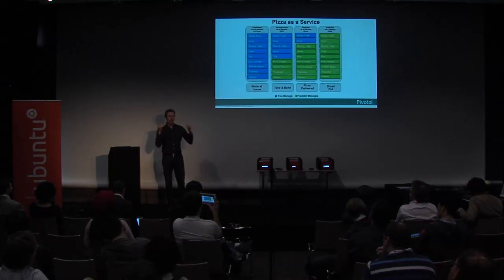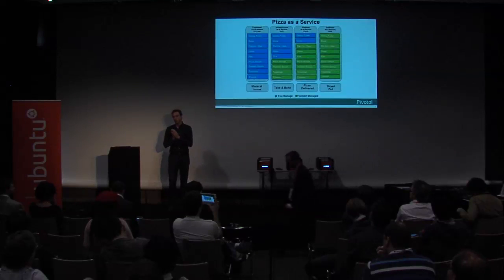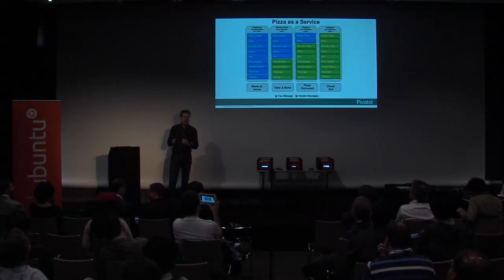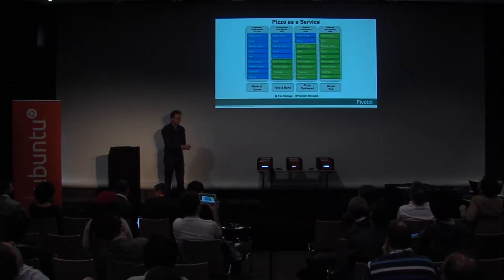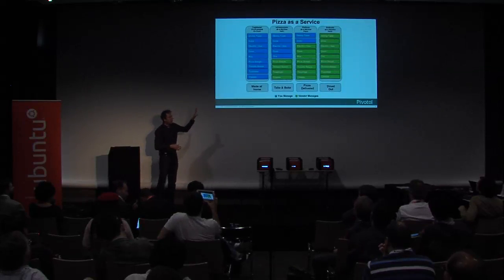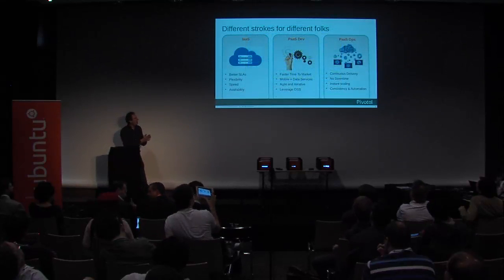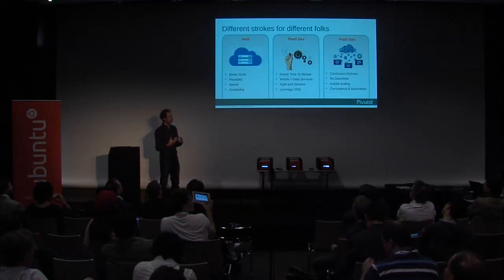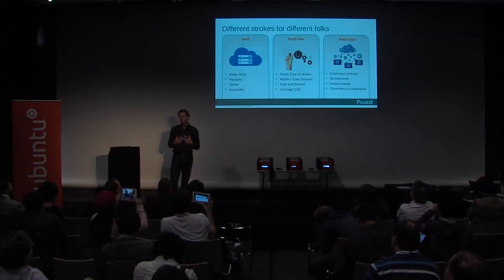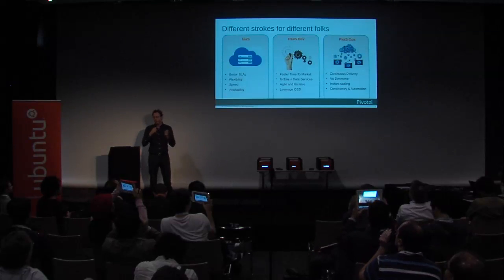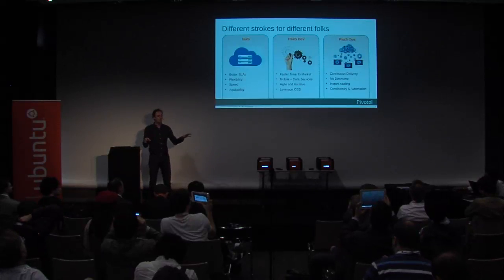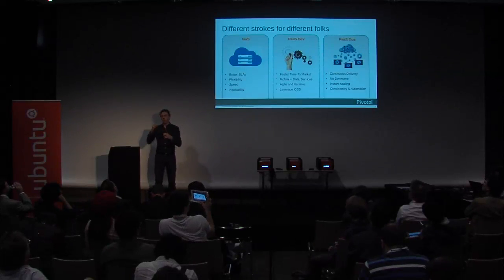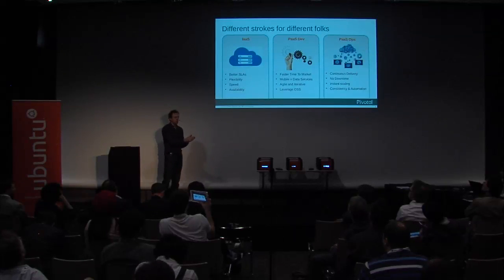Going to IaaS gives you better SLA, flexibility, speed, availability, VM portability, a nice generic abstraction, and security boundaries. Going to PaaS gives you an insane time-to-market benefit: you just write your code and deploy it to dev, staging, test, and prod without ever making changes — all configuration is separate from the software. You get built-in mobile and data services. Agile development and DevOps truly exists at the PaaS layer; it's really hard to get all the way through DevOps working with pure IaaS. We see customers who stood up OpenStack two or three years ago saying IaaS got them only so far.